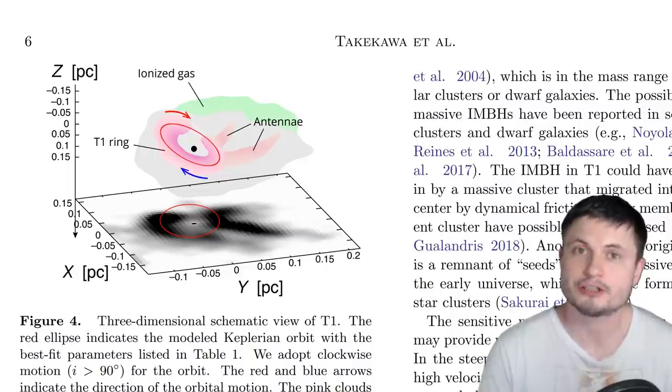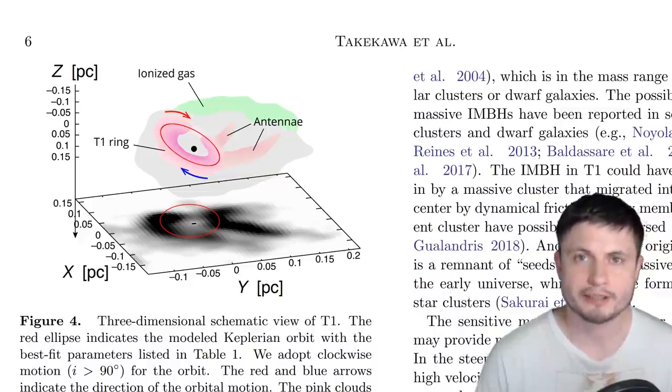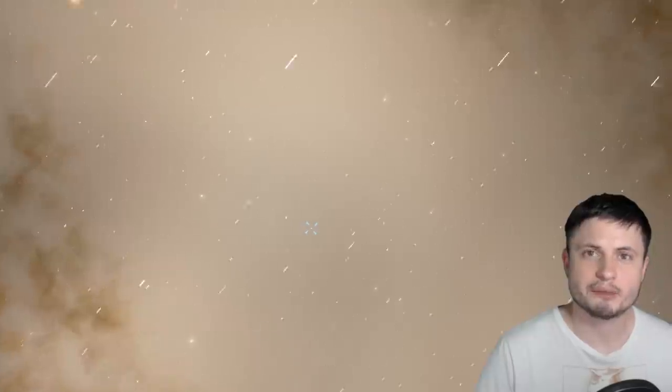Now for all we know, this could be obviously some other really massive object, like for example, maybe this is actually our first detection of a clump of dark matter in the middle of the galaxy. But right now there is really no evidence for that. A much easier and a much better explanation is that this is once again the fifth detection of a potential intermediate black hole right here in the Milky Way galaxy.